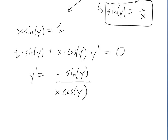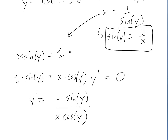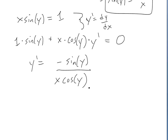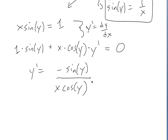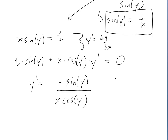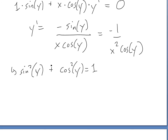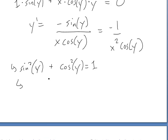Rearranging for y′ (which is dy/dx), we get y′ = −sin(y) / (x·cos(y)). We can substitute sin(y) = 1/x to rewrite this as y′ = −1 / (x²·cos(y)). Now we just need to express cos(y) in terms of x. Recall the Pythagorean identity: sin²y + cos²y = 1.